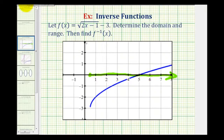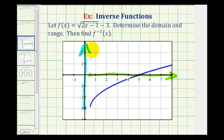To verify the range, we project the function onto the y-axis. Notice the y values start at y equals negative three, and the function moves up indefinitely, so the y values approach positive infinity. This confirms the domain and range are correct. Remember, the domain of the function will become the range of the inverse function, and the range of the function will become the domain of the inverse function.